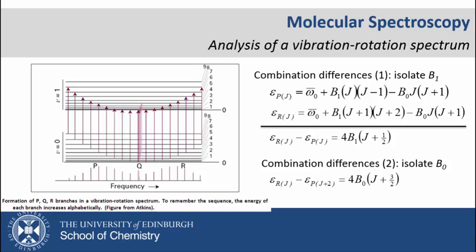Both of these equations are linear equations and hence we can easily deduce B₁ and B₀ from spectral data by obtaining the slope.